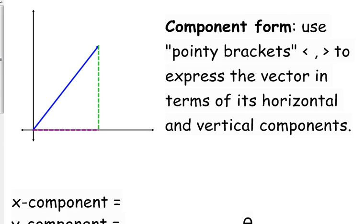We use arrows on each end to express the vector in terms of its horizontal and its vertical components. It's like its x and y coordinate, but a vector is not a point in space — it is that arrow, that ray. So we use the pointy brackets to distinguish this from a point.